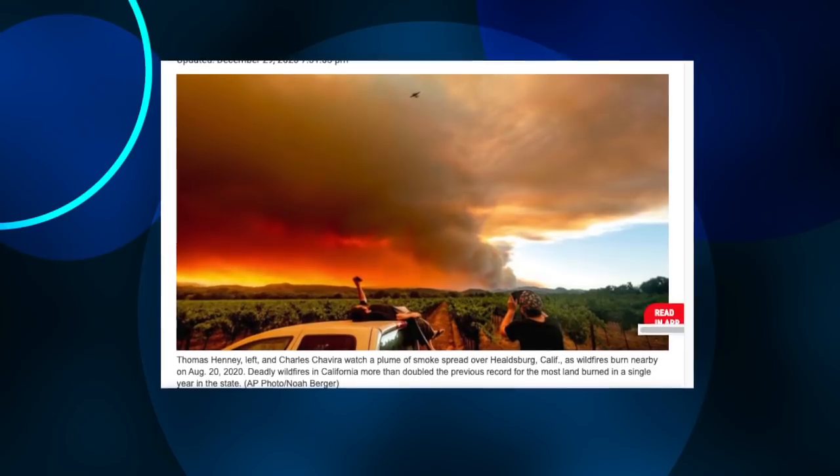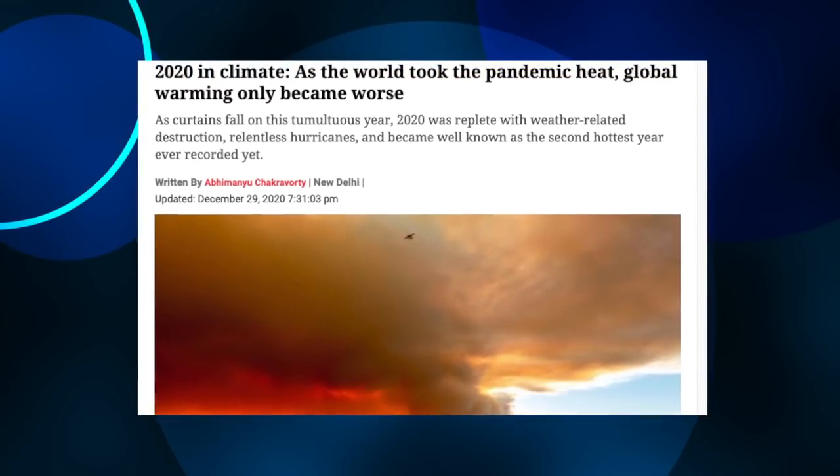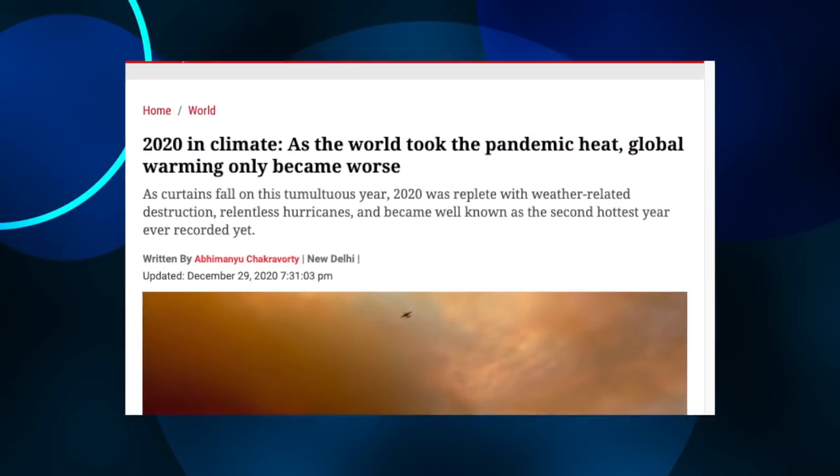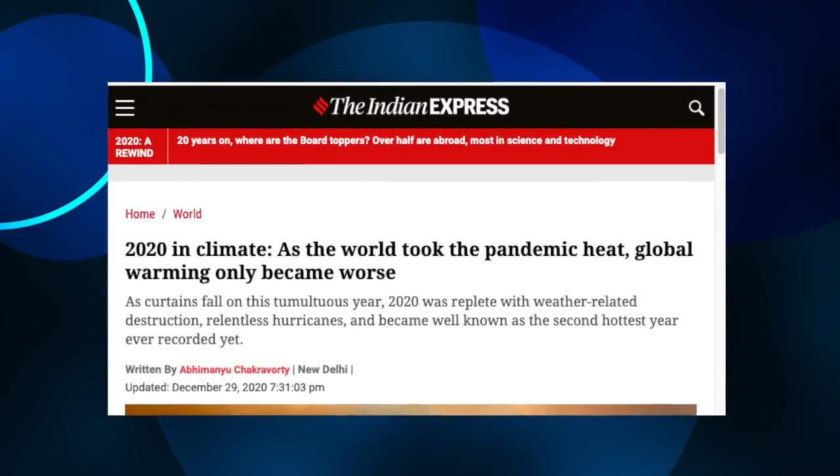The article is found in the Indian Express and it's called 2020 in Climate: As the world took the pandemic heat, global warming only became worse. It's a nice overview, to the extent any of this happening is nice, of climate change and where we are at this point. This article was updated just yesterday, by the way, in the Indian Express.